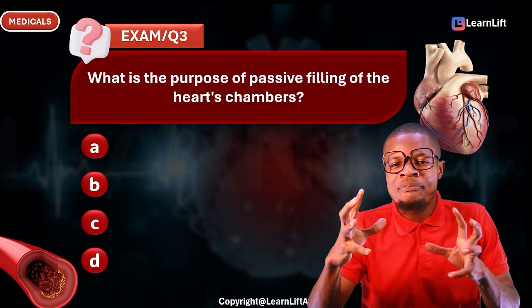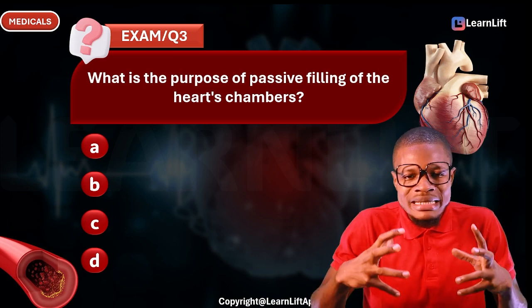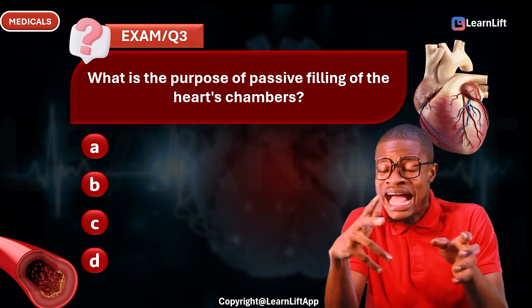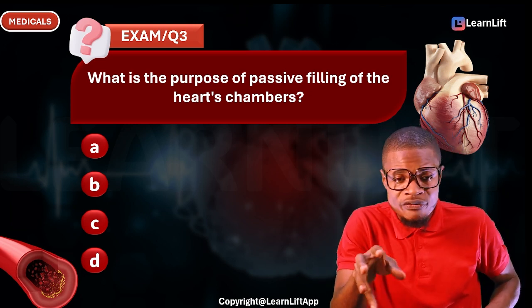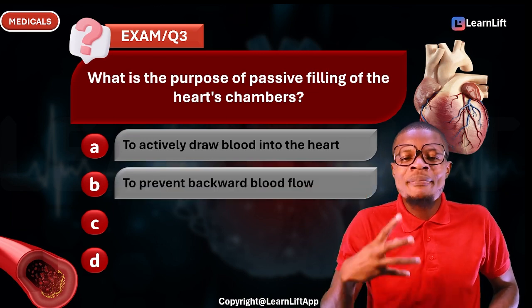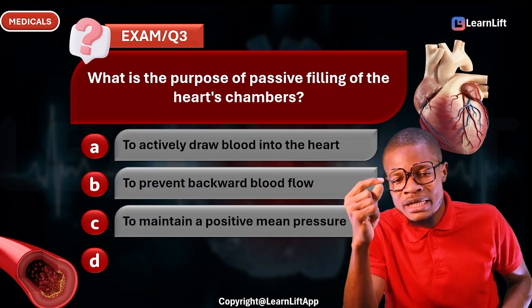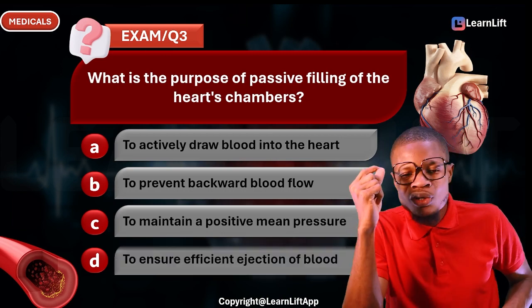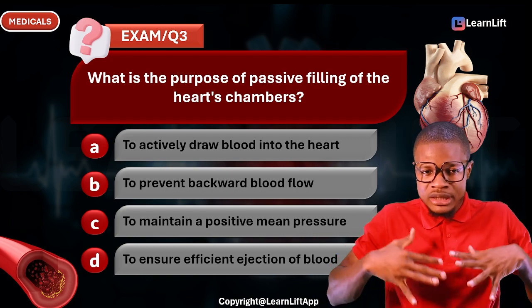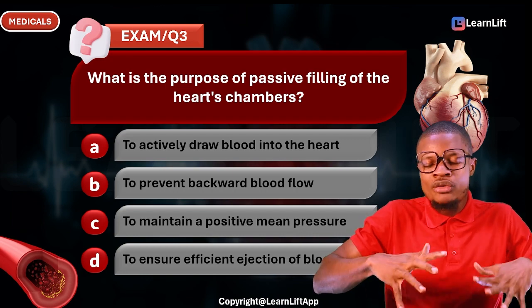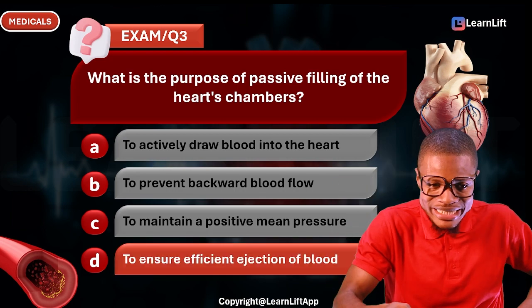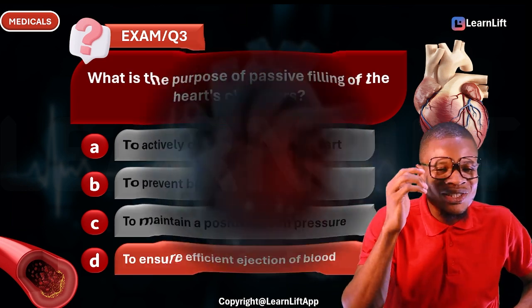Question three: What is the purpose of passive filling of the heart chambers? Option A: to actively draw blood into the heart. Option B: to prevent backflow of blood. Option C: to maintain positive mean pressure. Option D: to ensure efficient ejection of blood. The heart is filled passively during diastole to ensure efficient ejection of blood during systole — Option D is the correct answer.